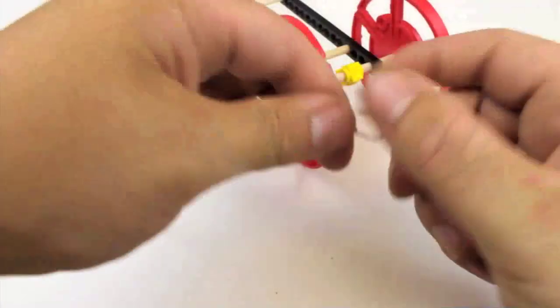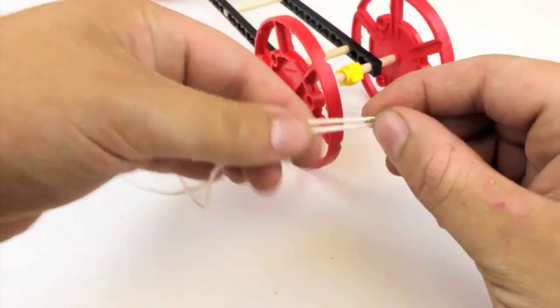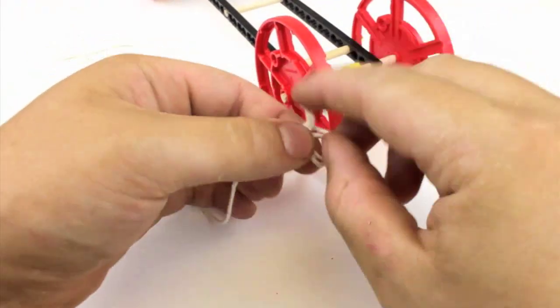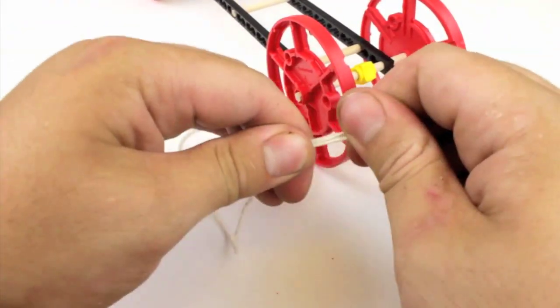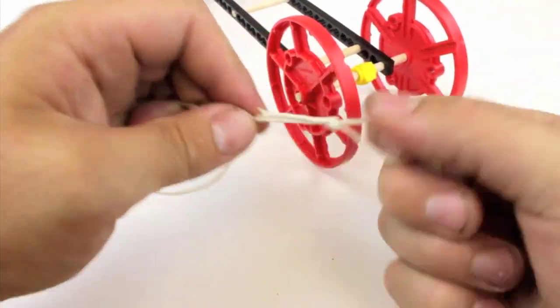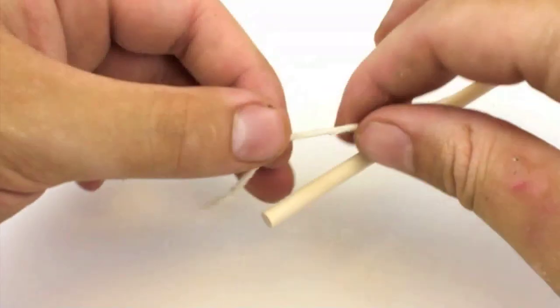Cut a piece of string that is 75cm long, which is about 30 inches, and tie a knot at the end that won't slip. Take the other end of the string and tie it tight to the end of the dowel.